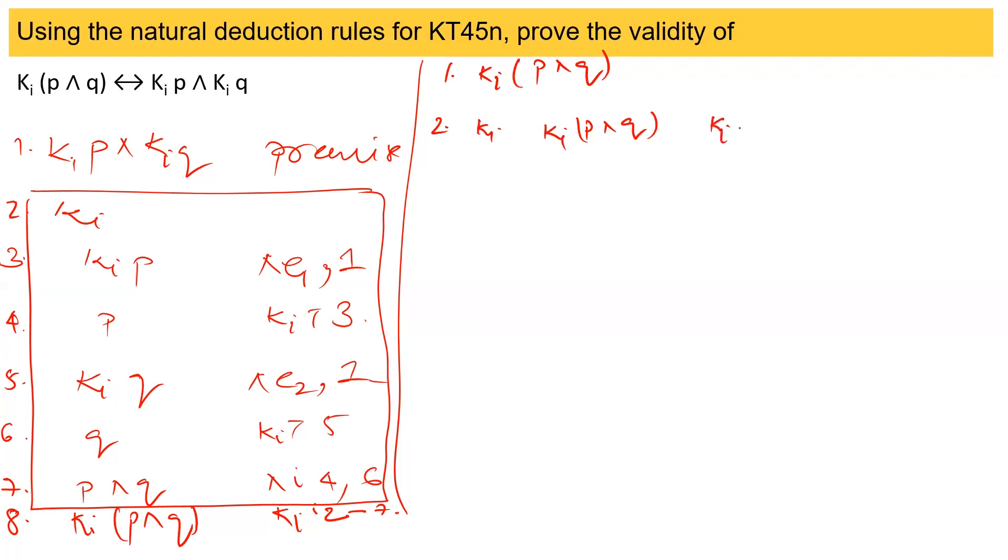This is the KI elimination rule of one. Now this gives me P and Q. This is the KI K1 T rule over two. Now I can say P. This is the AND elimination rule from three. Now since I have a K1 which is arbitrary, I can conclude KI of P, which is the KI introductory rule from two to four.